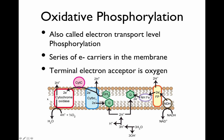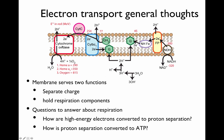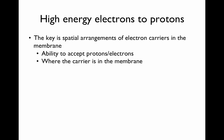Some general thoughts about electron transport: the membrane serves two functions — it separates the charge, since protons cannot penetrate it, and it holds the respiration components. Two key questions: first, how are high-energy electron carriers converted to proton separation? Second, how is this proton separation converted to ATP? We'll look at two mechanisms for generating this proton gradient from high-energy electrons. The key is the spatial arrangement of electron carriers in the membrane and their ability to accept protons and electrons depending on where the carrier is in the membrane. The first is the NADH dehydrogenase complex, where electrons are donated and transferred to quinone, pumping protons across the membrane into the quinone pool.